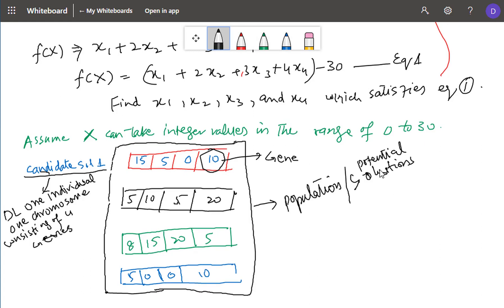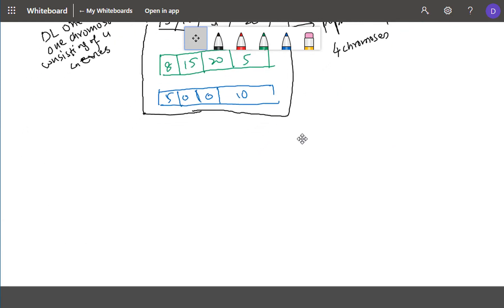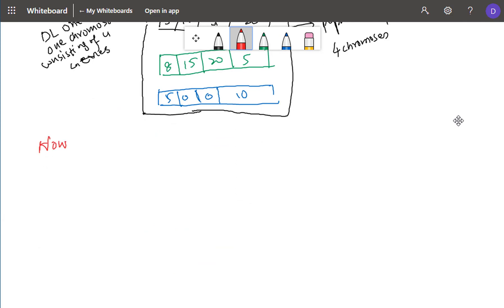In this unit we will try to answer some questions while solving this problem. The first question is among these six solutions, potential solutions, which ones are better and which ones are very bad, which ones are fit and which ones are unfit. How do we quantify fitness or bitterness?